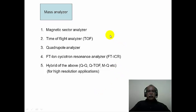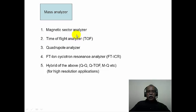Once ions are produced, they are analyzed in an electric sector or a magnetic sector analyzer. Magnetic sector analyzers are very common and separate ions based on their mass-to-charge ratio. One can also use a time-of-flight analyzer, where heavier ions move slower and lighter ions move faster. Quadrupole mass spectrometers are also used. Ion cyclotron resonance analyzers are very sensitive, using Fourier transform techniques. Combinations of these analyzers produce hyphenated hybrid mass spectrometers.